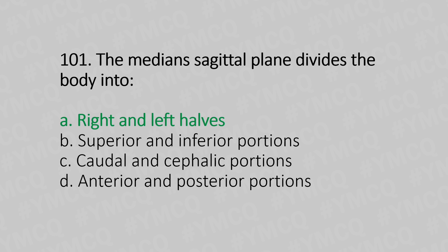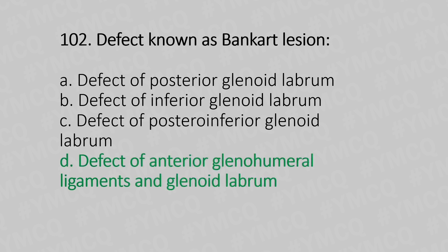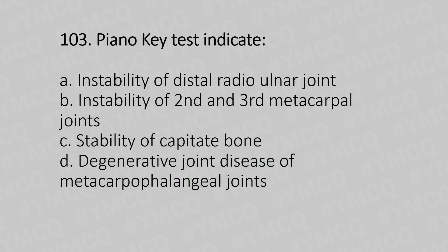Now let's move to question number 102. Defect known as Bankart lesion. Option A, defect of the posterior glenoid labrum. Option B, defect of inferior glenoid labrum. Option C, defect of posterior inferior glenoid labrum. Option D, defect of anterior glenohumeral ligaments and glenoid labrum. And the answer is Option D, defect of anterior glenohumeral ligaments and glenoid labrum.